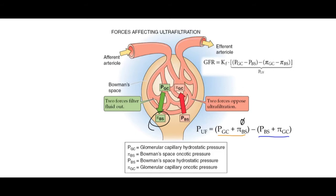This ultrafiltration pressure tells you what's happening at the beginning of the glomerular capillary bed, coming out of the afferent arteriole. It actually changes as you move through those capillaries. As blood passes through, the net filtration pressure gets smaller and smaller until it reaches zero — an equilibrium point — similar to reaching equilibrium for gas exchange across respiratory capillaries. You start with a difference of about 10 to 15 mmHg, and it dwindles as you move across.